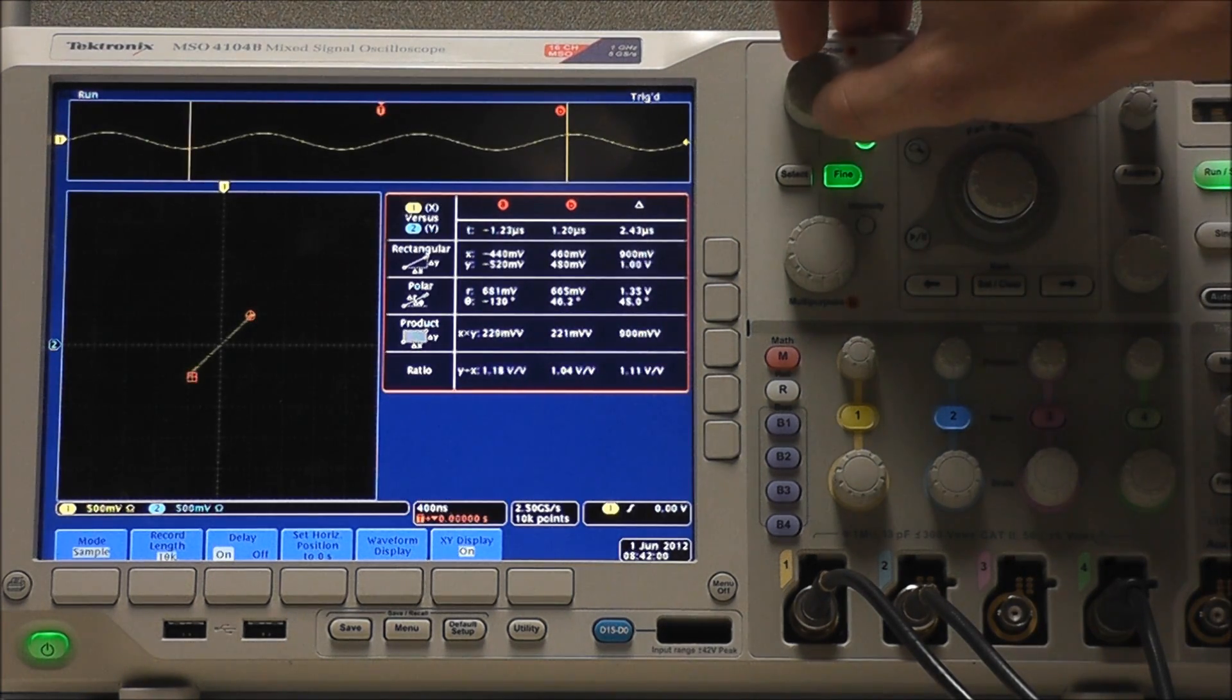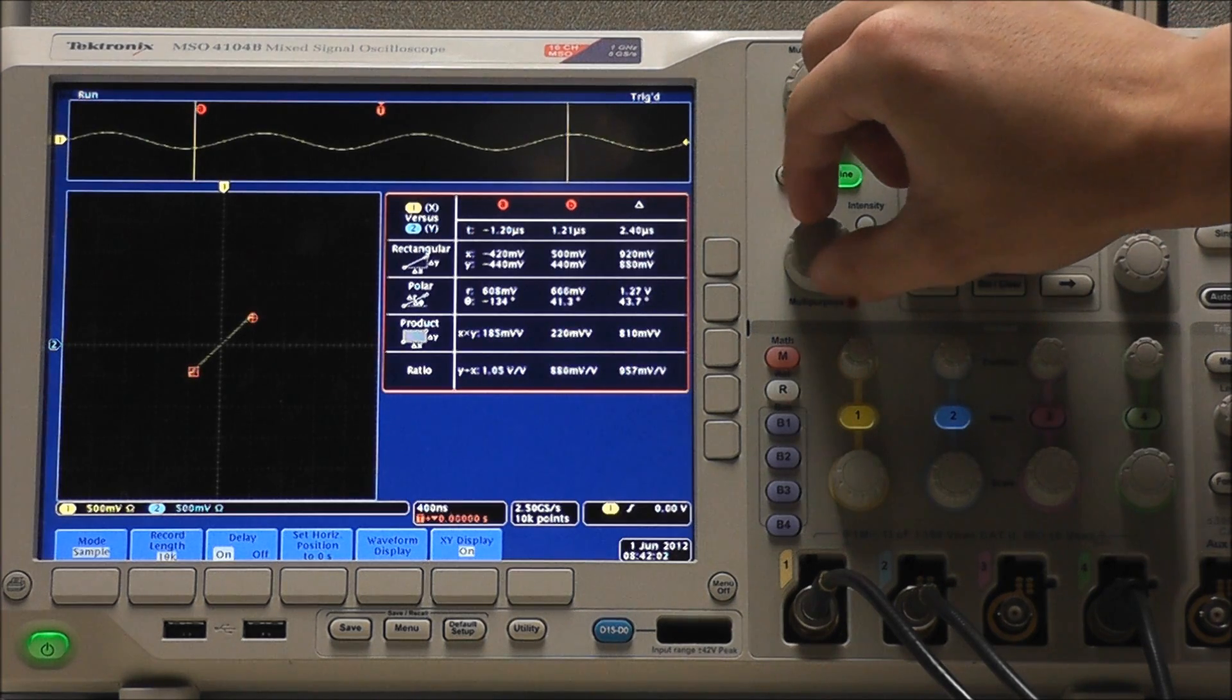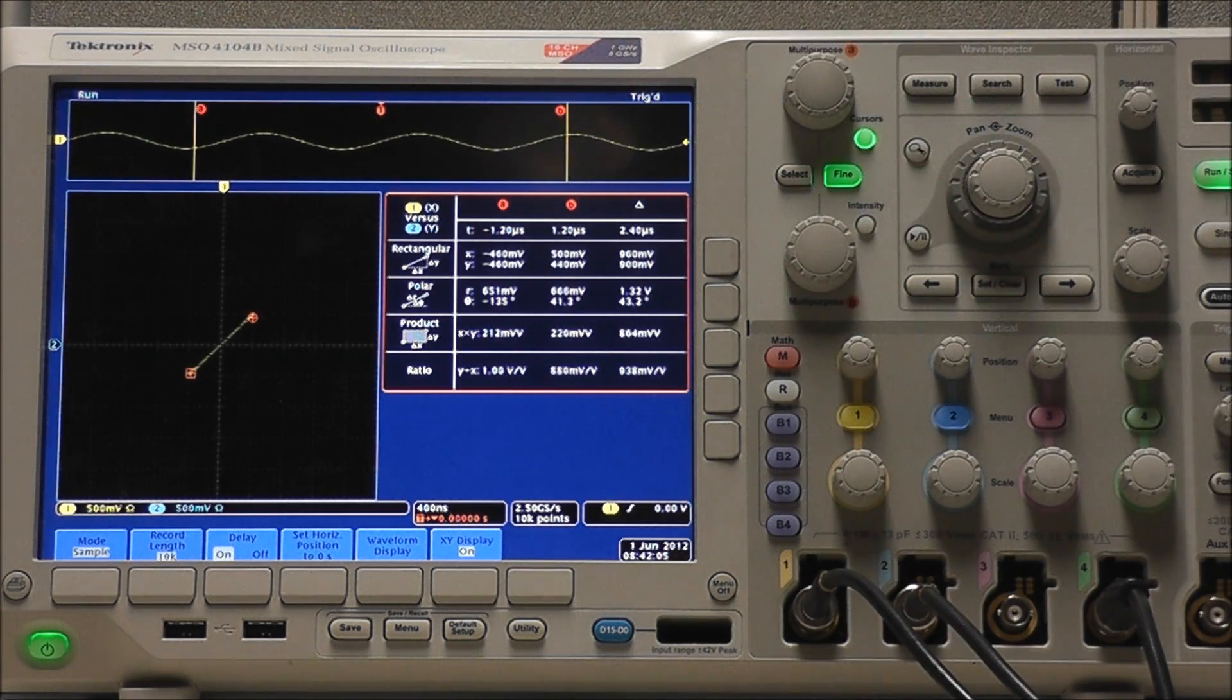We can use multipurpose A to adjust the lower bound for time, and multipurpose B to adjust the upper bound for time. However, as we adjust our A and B, it will also affect the values for our X's, Y's, R's, and thetas.